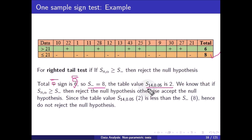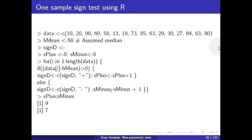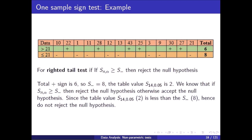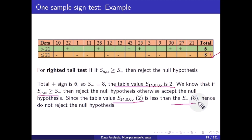The table value S(14, 0.05) is 2, where 14 is the total number of data points and 0.05 is the level of significance. For the right-tail test, if S(n, alpha) is greater than or equal to S-minus, we reject the null hypothesis; otherwise we accept it. Since the table value 2 is less than S-minus = 8, we do not reject the null hypothesis.